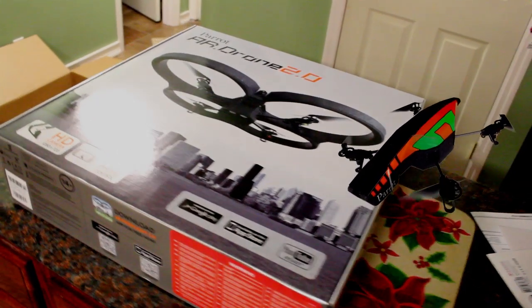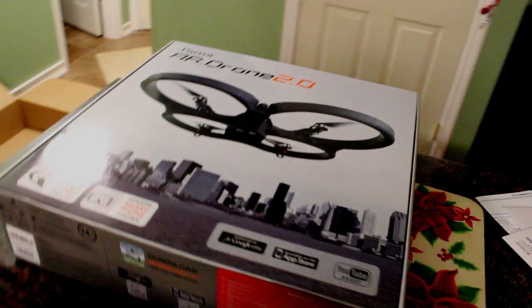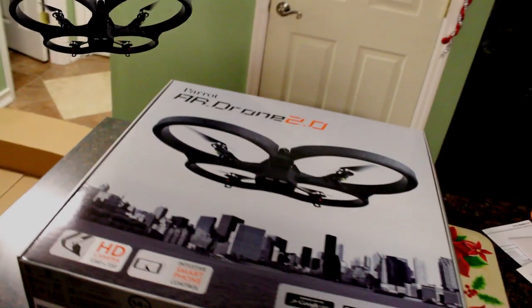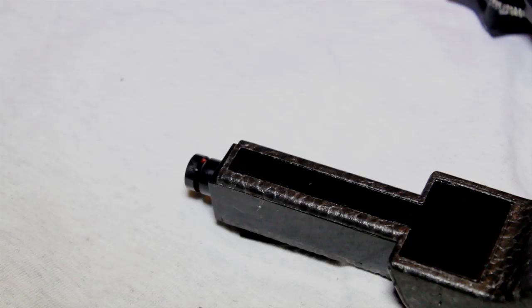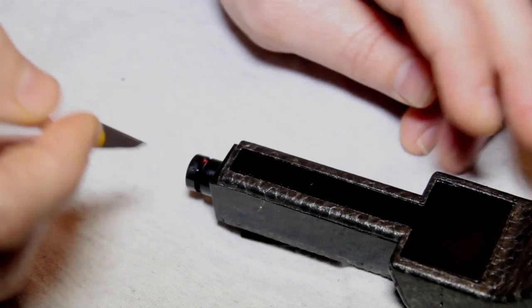Okay, this video is about modifying your AR drone 2.0 camera to face more of a downward angle. From the factory it faces straight ahead, which is pretty nice, but it doesn't give the view I want. I want to see more of the ground.